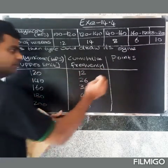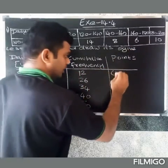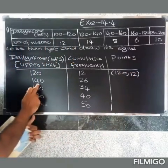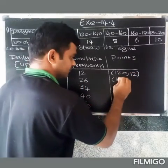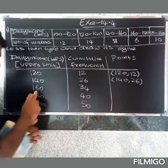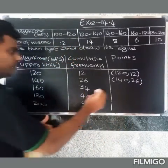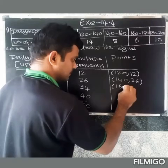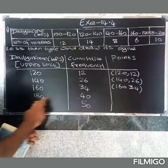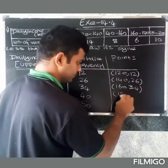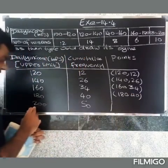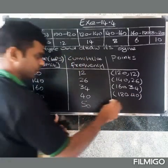So the points to plot are: 120 comma 12, next 140 comma 26, next 160 comma 34, next 180 comma 40, and next 200 comma 50.